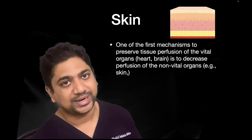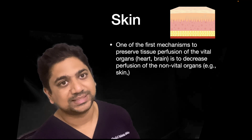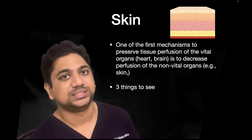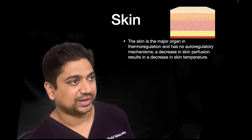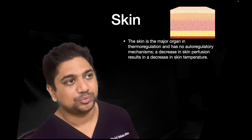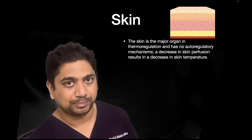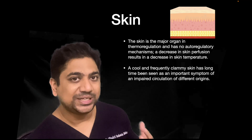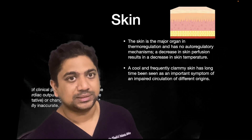One of the major defense mechanisms against hemodynamic compromise is to shunt circulation away from non-vital organs to vital organs. Since skin is a non-vital organ, it gets affected very early. Three main features to assess in skin are: temperature, color, and capillary refill time. Skin is a major thermoregulatory organ, and when perfusion is impaired because blood is being shunted to vital organs, the skin becomes cold and clammy — a finding frequently associated with hemodynamic compromise.